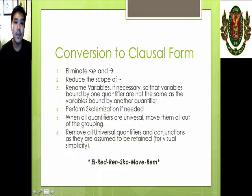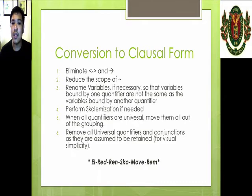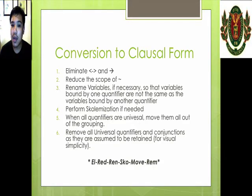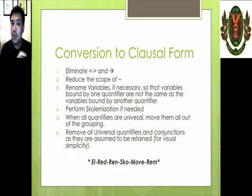This is how you can properly convert all of the predicates into clausal form. First, we have to eliminate the equivalence symbol and the implication symbol. We also have to reduce the scope of the negation. Then we will rename variables if necessary so that variables bound by one quantifier are not the same as variables bound by another quantifier. We will then perform Skolemization if needed, and then when all quantifiers are universal, we move them all out of the grouping — that's why the distributive laws are important.